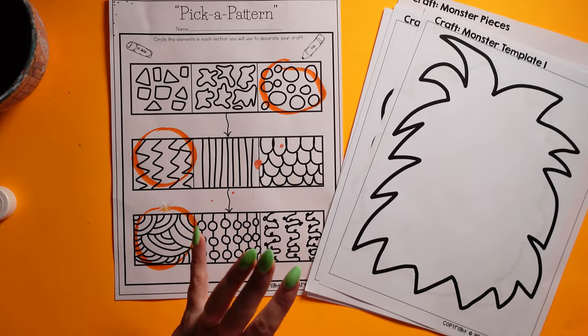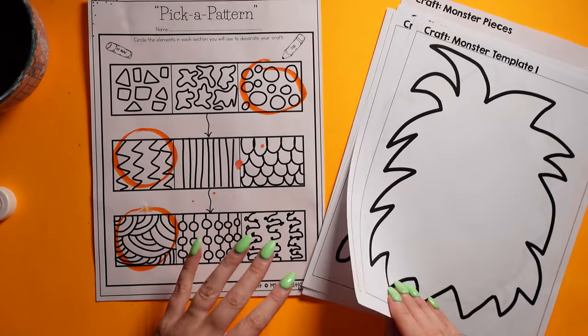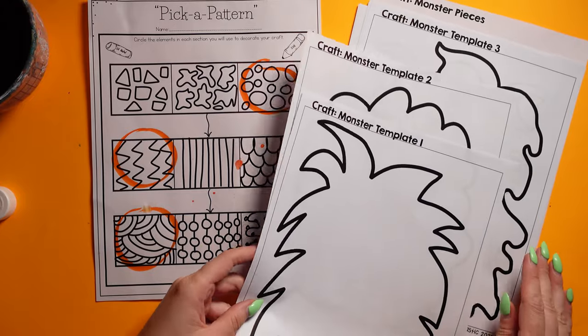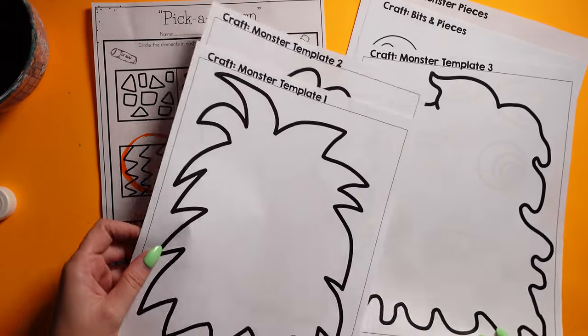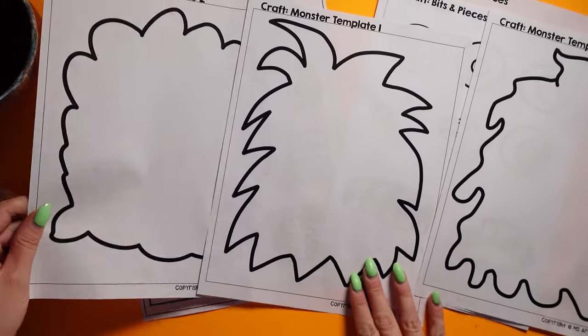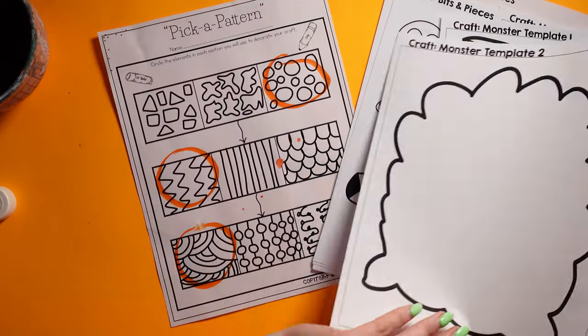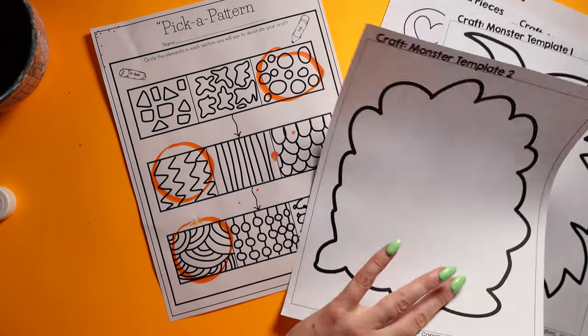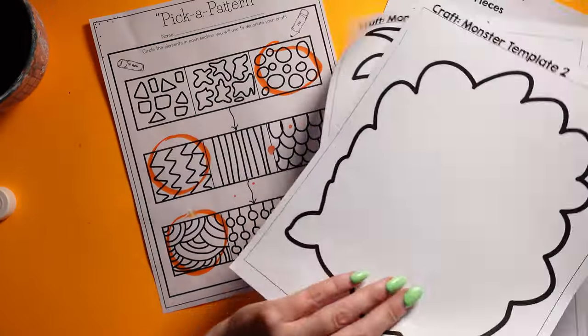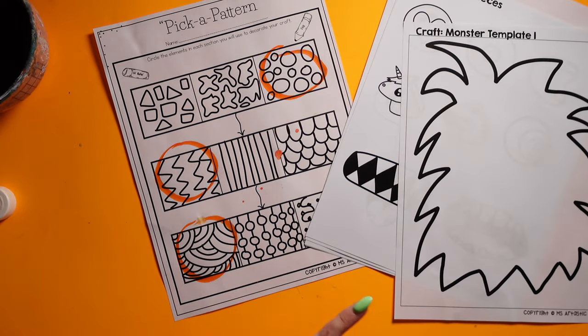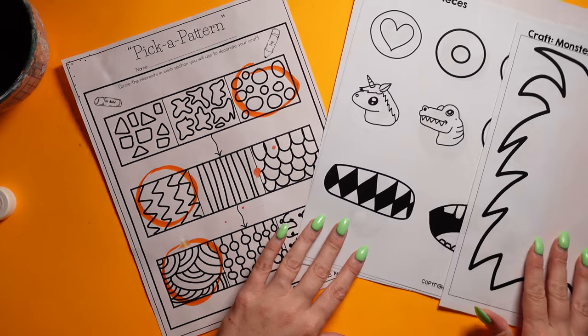All right, so now the monster one is kind of a unique craft because I have a few different templates. So there's a lot more templates in this one compared to the other ones. First of all, there are three different bodies to choose from. So kids have three different bodies to pick from, whatever style they want, or if you want to pick as a teacher, it's up to you for photocopying.